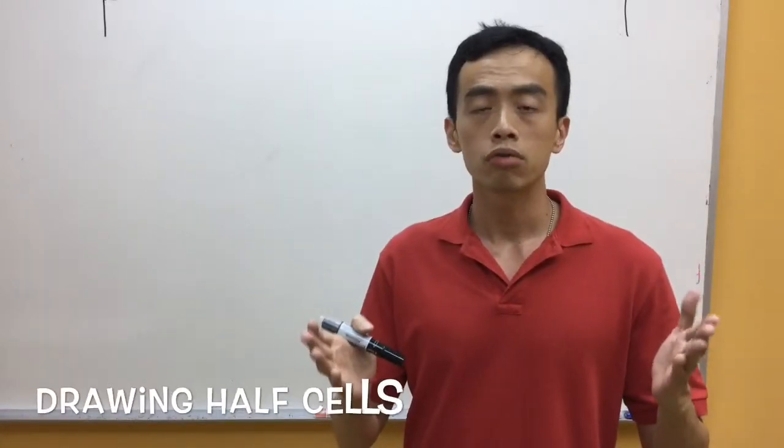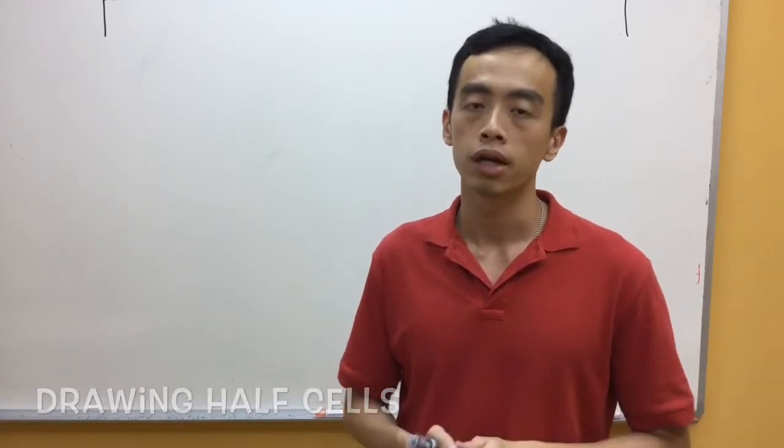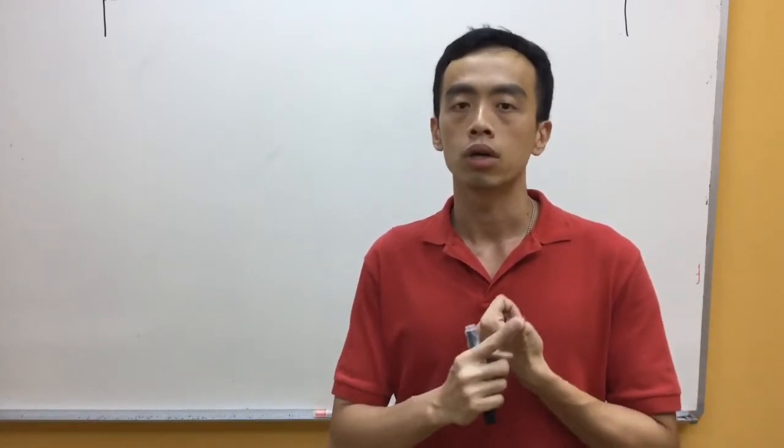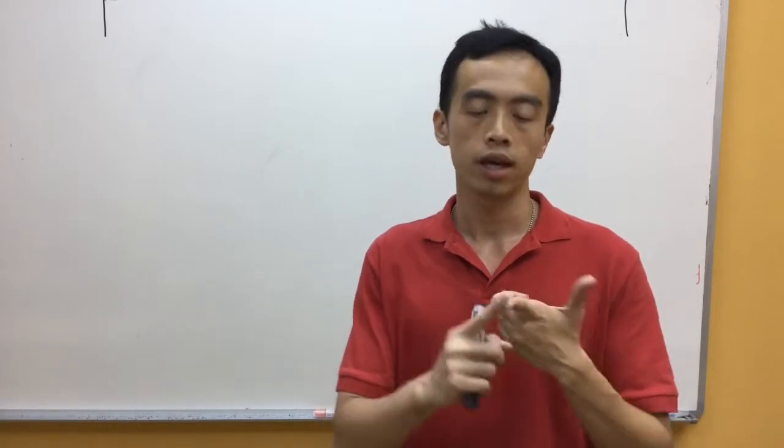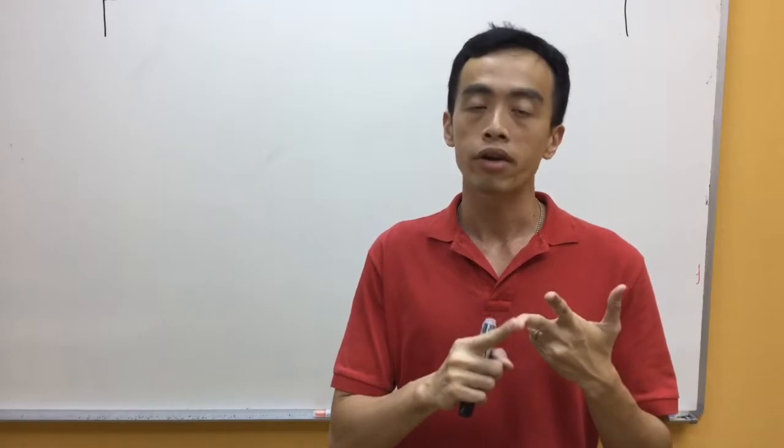Hi, today I'm going to share with you how to draw the three different types of half-cells for electrochemical cell. First type is our metal-ion half-cell, second type is our non-metal-ion half-cell, the third type is an ion-ion half-cell.